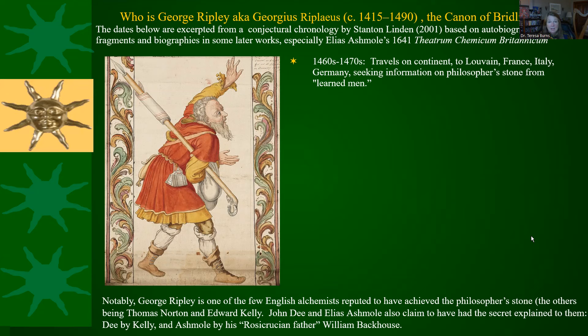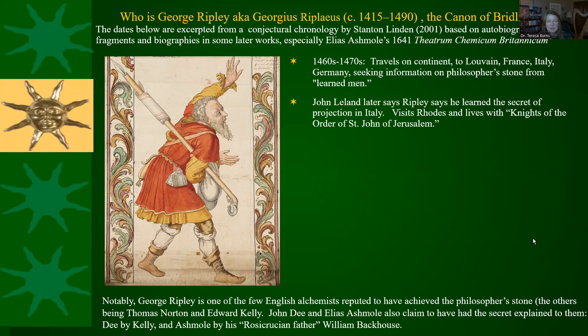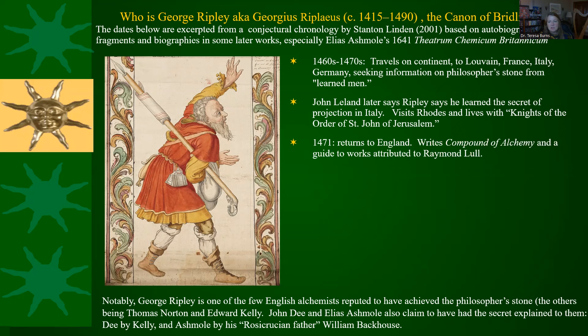Back to Ripley. In the late Middle Ages in England, Ripley has left England and is traveling around on the European continent. Of note, while it's still the late Middle Ages in England, the Italian Renaissance has started further south — it takes almost 100 years for those ideas to spread north. John Leland later says that Ripley learned the secret of projection in Italy. Ripley visits Rhodes and lives with the Knights of the Order of St. John of Jerusalem.